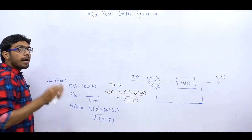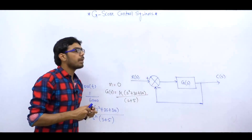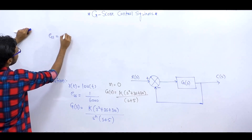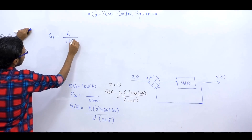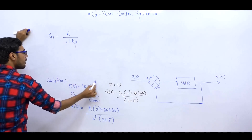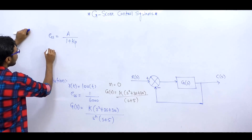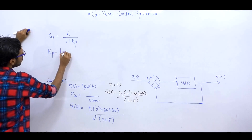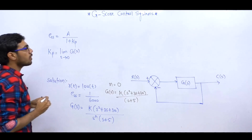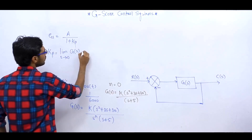अगर हमारे पास INPUT STEP FUNCTION हो, तो हम directly — SYSTEM UNITY FEEDBACK में हो — तो यह वाली formula लगा सकते हैं STEADY STATE ERROR find करने के लिए। STEADY STATE ERROR is equal to A divided by (1 + KP), यहाँ पर A क्या होता है — जो STEP FUNCTION है INPUT में, उसका AMPLITUDE। KP को बोलते हैं POSITION ERROR CONSTANT।